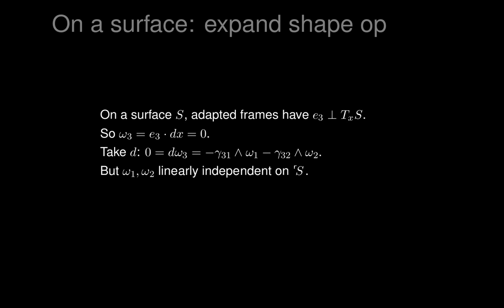We expand out using the structure equations of Euclidean space and obtain some equation about linear combinations of wedge products of gammas and omegas. Using a little bit of linear algebra, because omega_1 and omega_2 are linearly independent - you can move in the direction of E1 or E2 on the surface - this enables us to solve for the gammas. The gamma_i3's must be linear combinations of the omegas, omega_1 and omega_2.